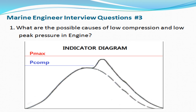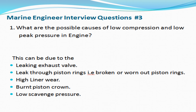The first question: what are the possible causes of low compression and low peak pressure in an engine? You need to be able to analyze the indicator diagram and take appropriate measures. When the red line is P-Max and the blue line is P-Com, the bottom pressure is low. This can be due to a leaking exhaust valve, leakage through the piston ring, high liner wear, burnt piston crown, or low scavenge pressure.